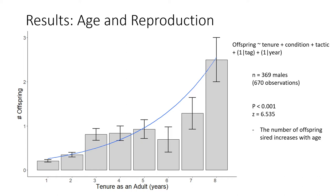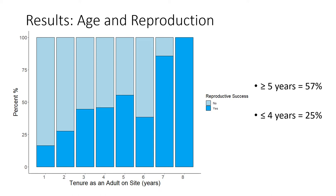We found that tenure has a positive effect on annual reproductive success, and that the longer an individual remained on site, the more offspring they would have on average each year. Additionally, we found that over 50% of males tenured five years or longer sired offspring, while only about 25% of those four years or less found success. As you can see, with each year of tenure, the percentage of males who sired offspring increases.